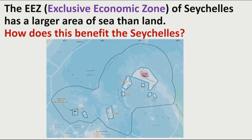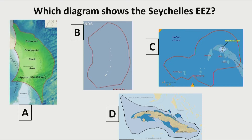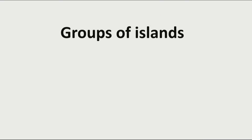We can see that the EEZ of Seychelles has a larger area of sea than land, and the different islands of Seychelles are spread within our area of sea. So, how does this benefit the Seychelles? We have a large area of sea — how does it benefit our country? I will leave this question with you. Here we have four EEZ of different countries — which one is showing the Seychelles EEZ? Of course, it's C. Let's move to our topic: groups of islands.